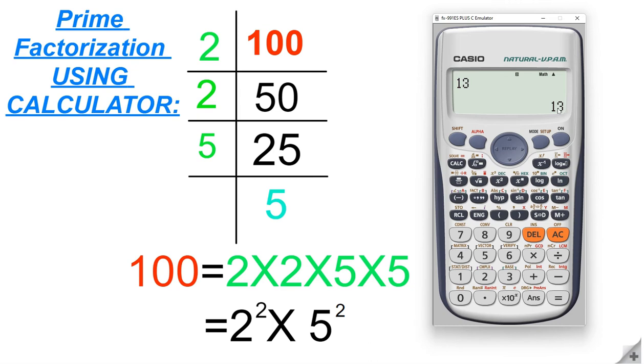If the number is a prime number then it cannot be further prime factorized. Let's do the same thing for another number. Let's give number 17 and do the same thing here, and this number cannot be further simplified and further factorized.